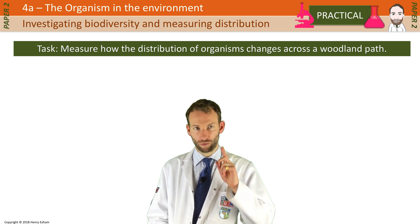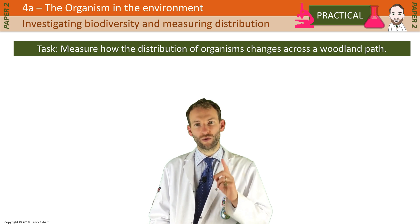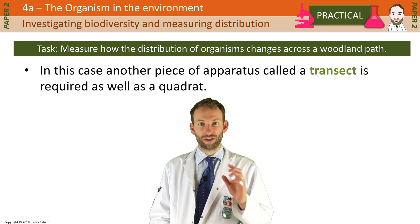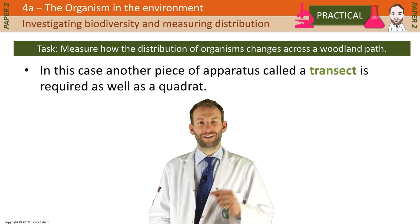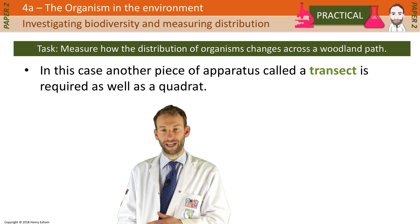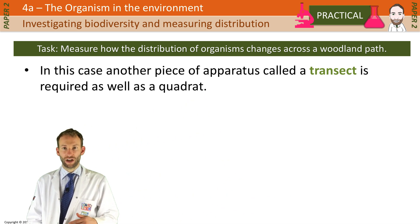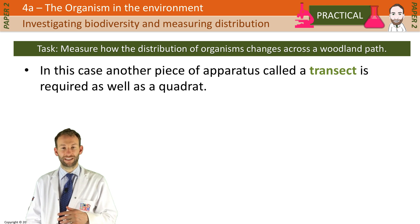In this case you're going to need one extra piece of apparatus which is called a transect. So you need your transect and you need your quadrat as well. A transect essentially is a line — it's just a long line, probably a tape measure, that you can use to show you where to take your readings.